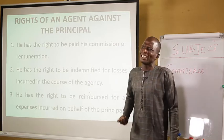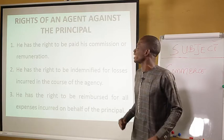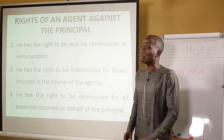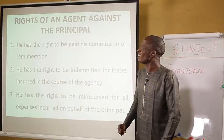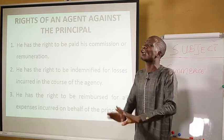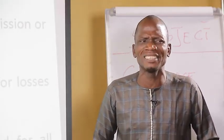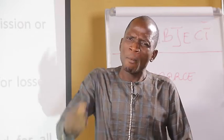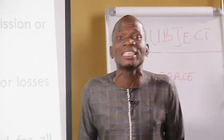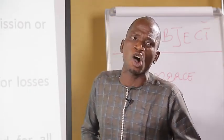Now we are going to look at the second item, which is rights of an agent against the principal. One, he has the right to be paid his commission or remuneration or reward. An agent has a right — he deserves that right to ask the principal to pay him for what he has worked for. It is your right as an agent to be paid the commission for the work done.